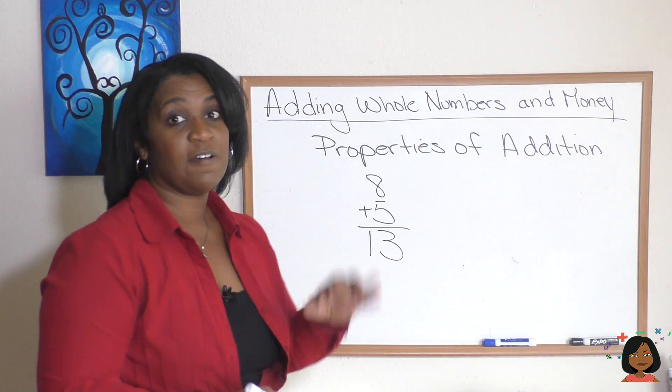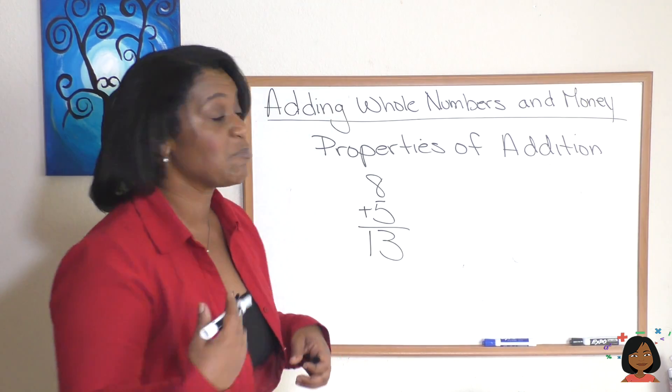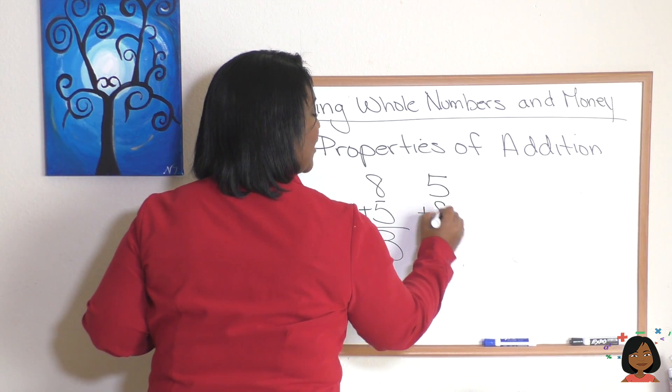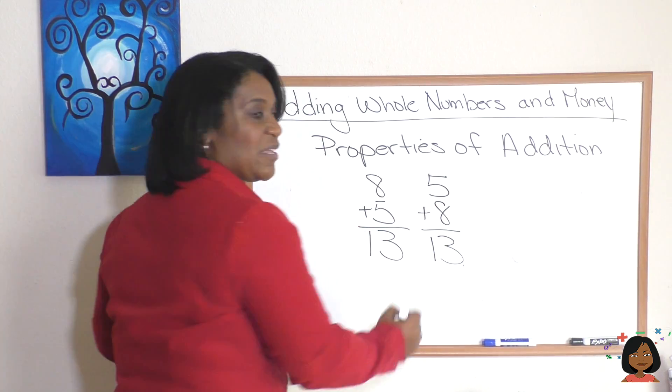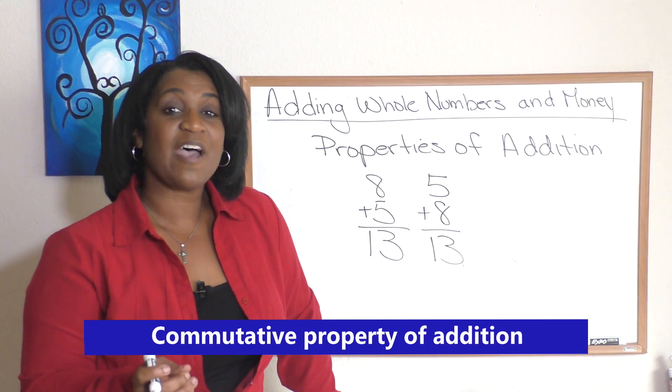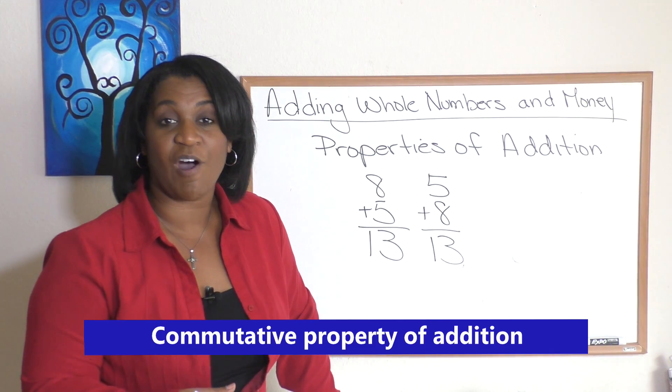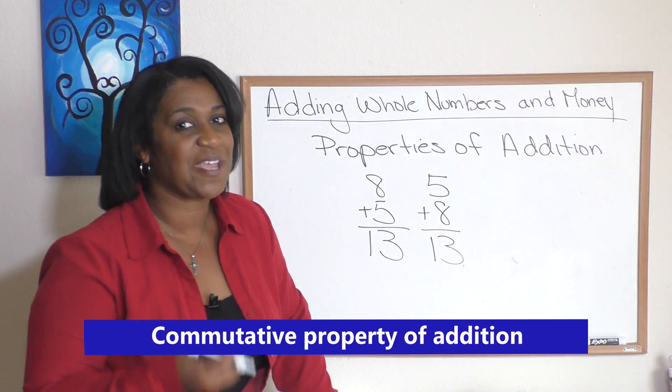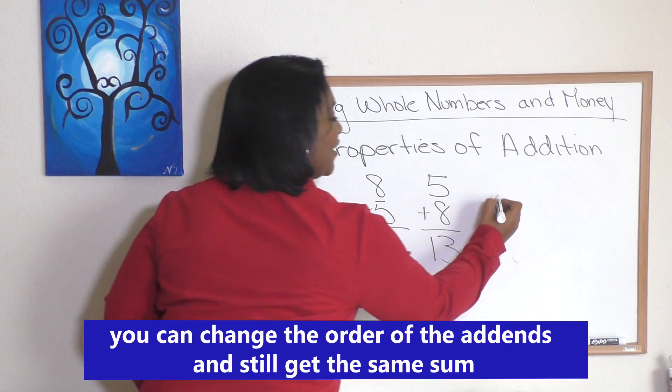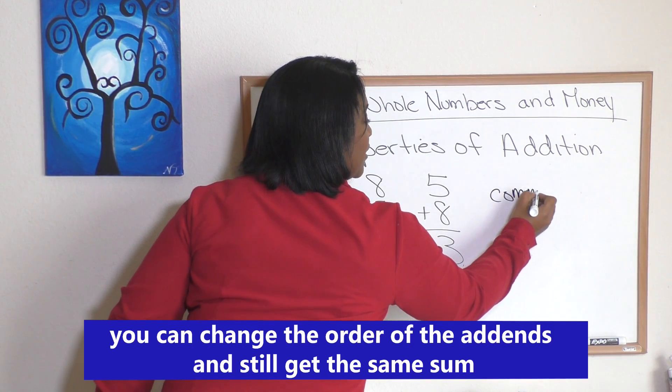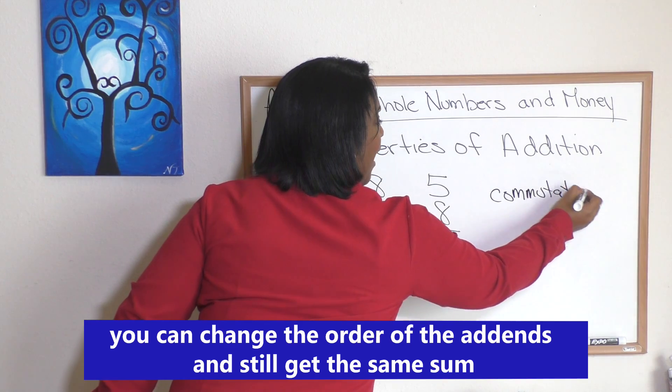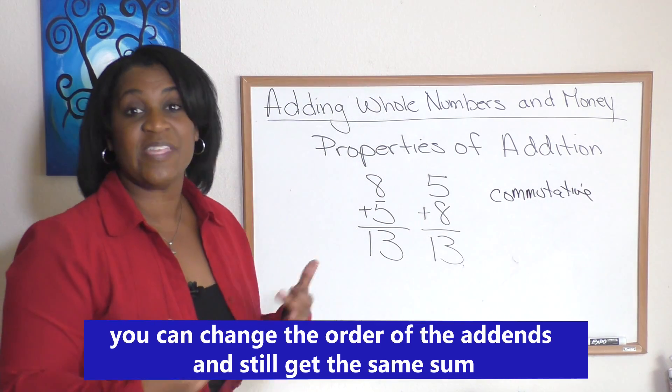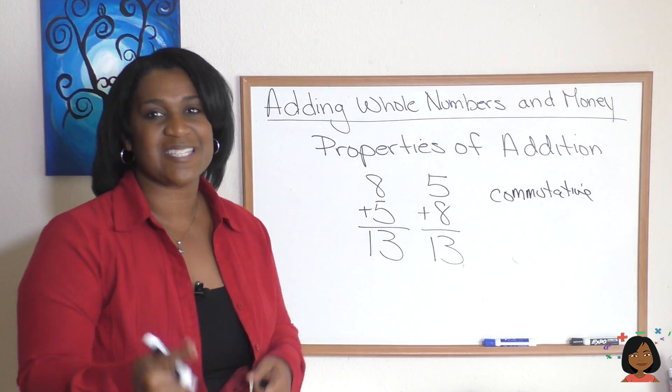So I'm starting with five this time and I'm adding eight. Well that also equals thirteen. Well in math this is a certain property that we call the commutative property of addition. Commutative means it doesn't matter the order that we add the addends, the sum is still going to be the same.